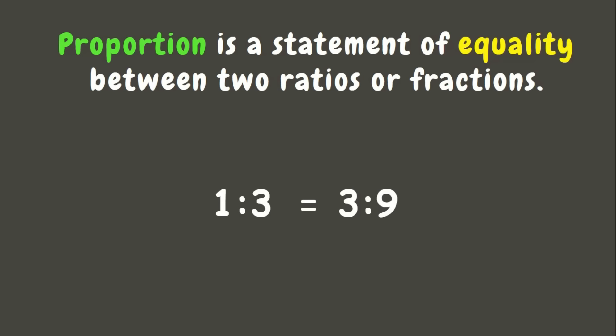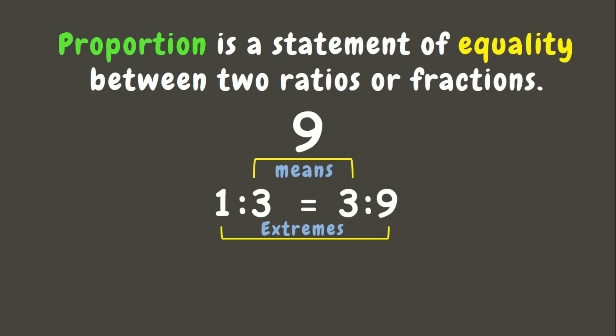Proportion is a statement of equality between two ratios or fractions. For example, one is to three is equivalent, or proportional, to three is to nine. In a proportion, there are two parts: the numbers found inside are called the means, while the numbers outside are called the extremes. We know ratios are proportional if the product of the means equals the product of the extremes. Three times three is nine, and nine times one is also nine — so they are proportional.